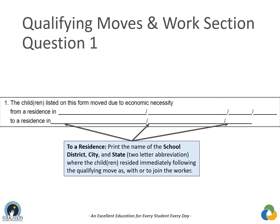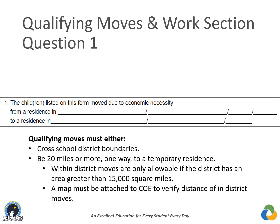'To a residence in' refers to the location where the child resided immediately following the qualifying move as the worker, or to join the worker. A qualifying move can never be made to a country outside the United States. The child and migratory worker must have crossed school district boundaries, or in districts of more than 15,000 square miles, they can cross school district boundaries or travel 20 miles or more one way to a temporary residence. For moves within a district greater than 15,000 square miles, a map with a scale for determining distance must be attached to the COE, and the interviewee will verify the route traveled.